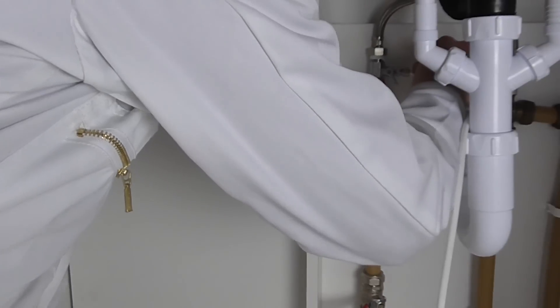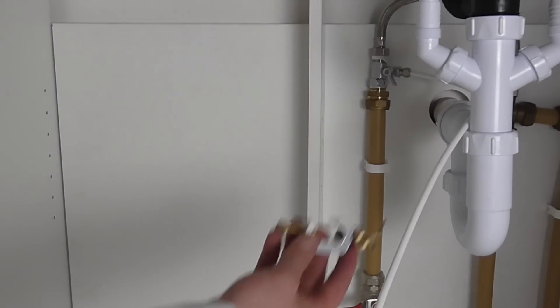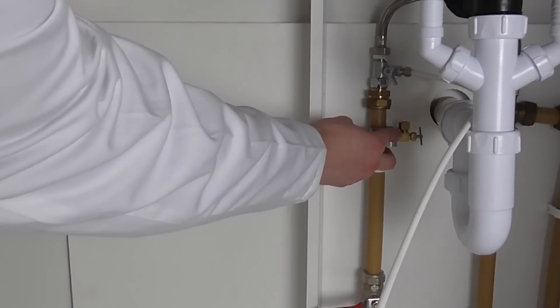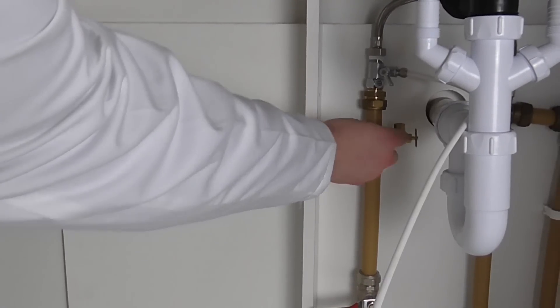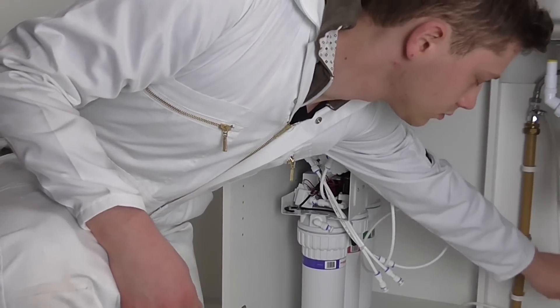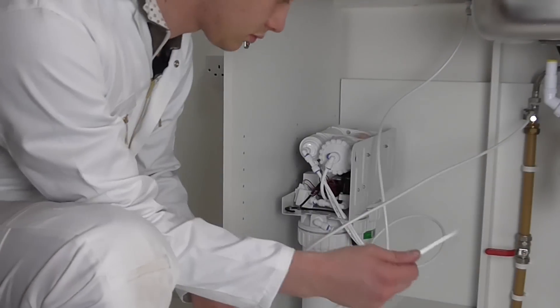The saddle valve clamps onto your water pipe and pierces a hole with its self-tapping screw. If you're using the saddle valve and have plastic piping, it is recommended that you pre-drill a 2mm hole in the pipe as holes created by saddle valves in plastic piping tend to close over after time.